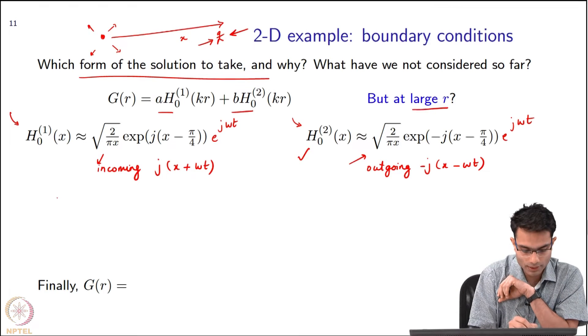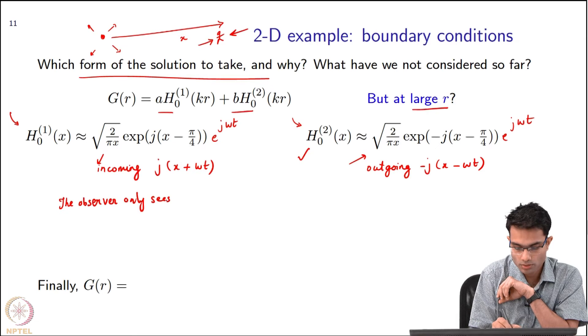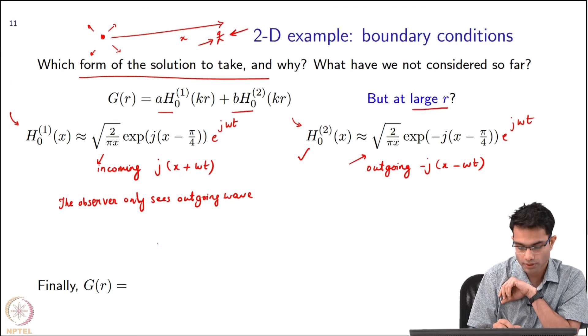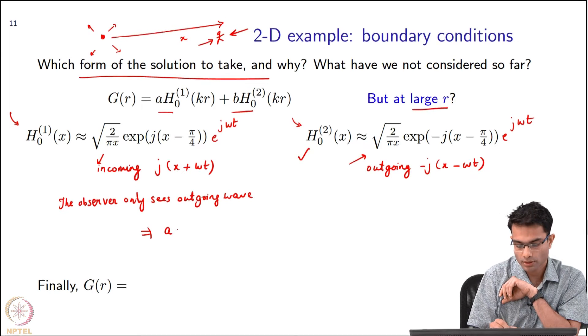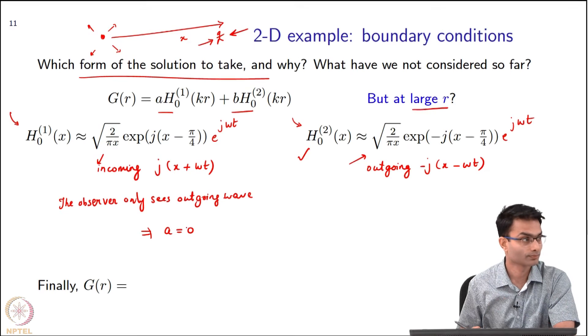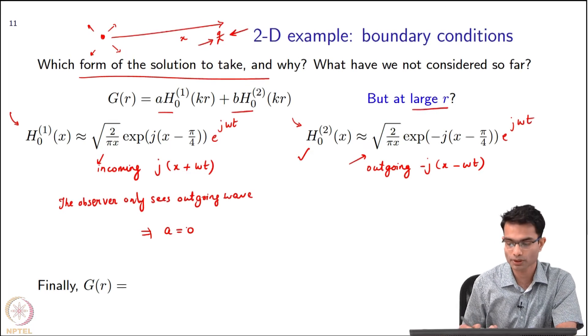Based on the observer only sees outgoing wave, this implies a is equal to zero. a equals zero guarantees that the solution is purely outgoing.